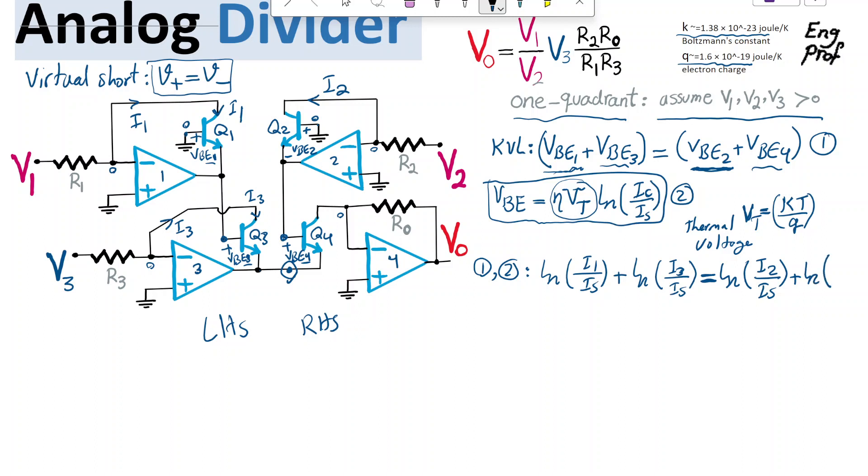for transistor Q4, we have I4 that is passing through the collector of that transistor, so it's going to be I4 divided by IS. Great.